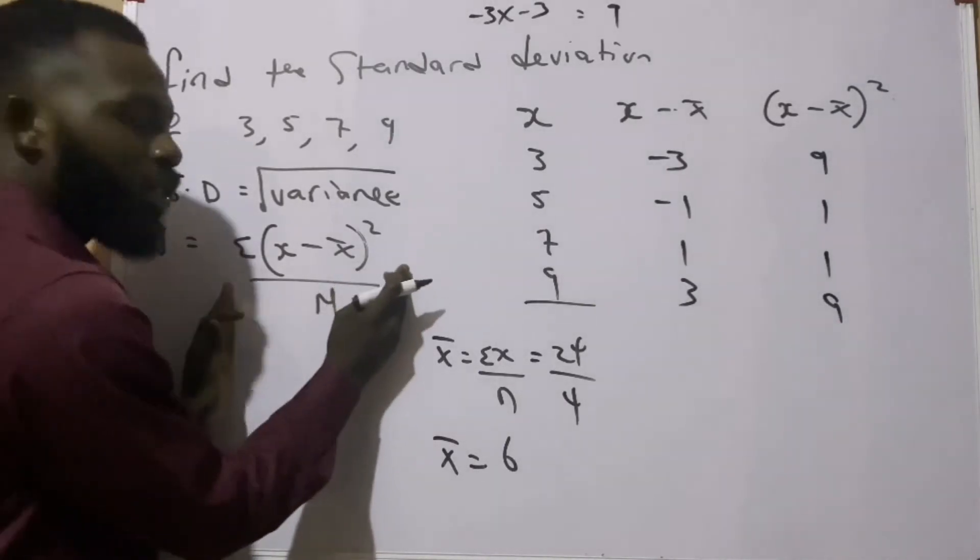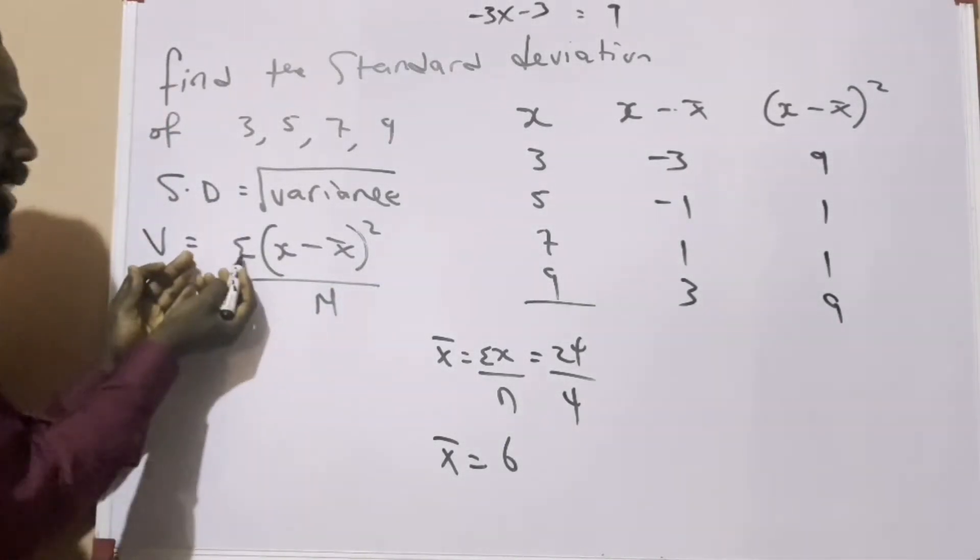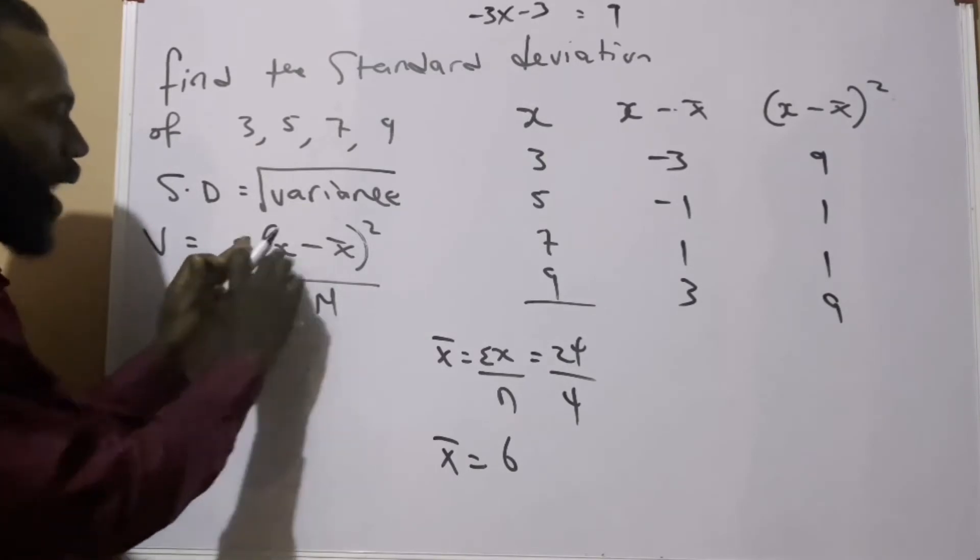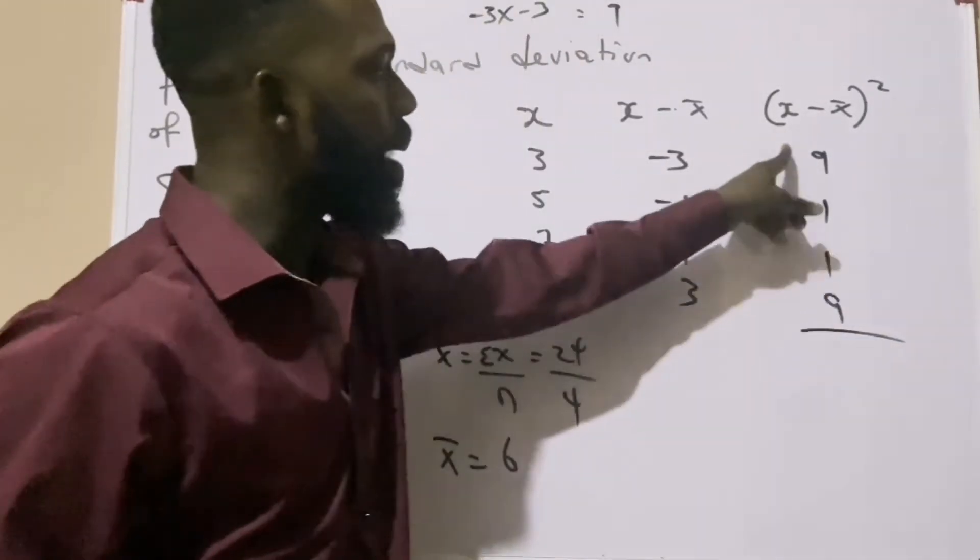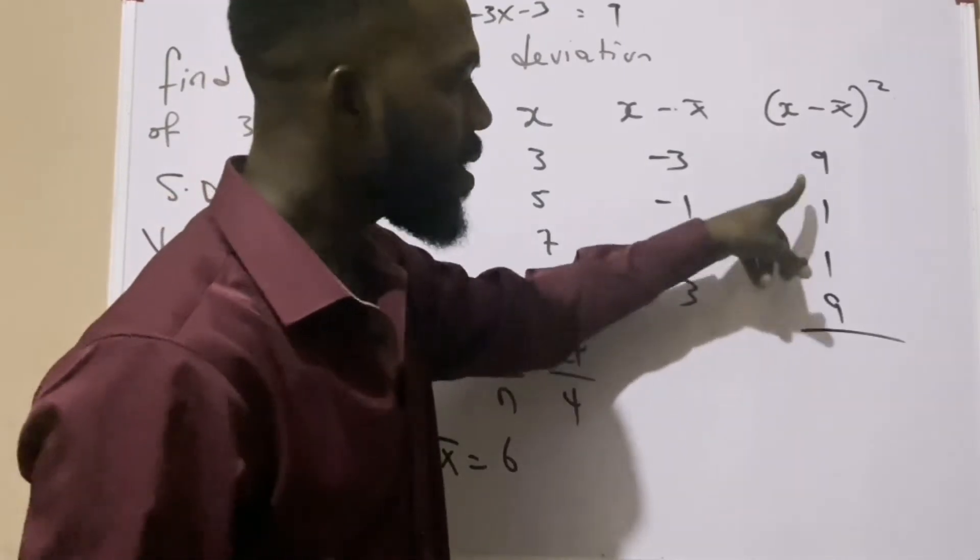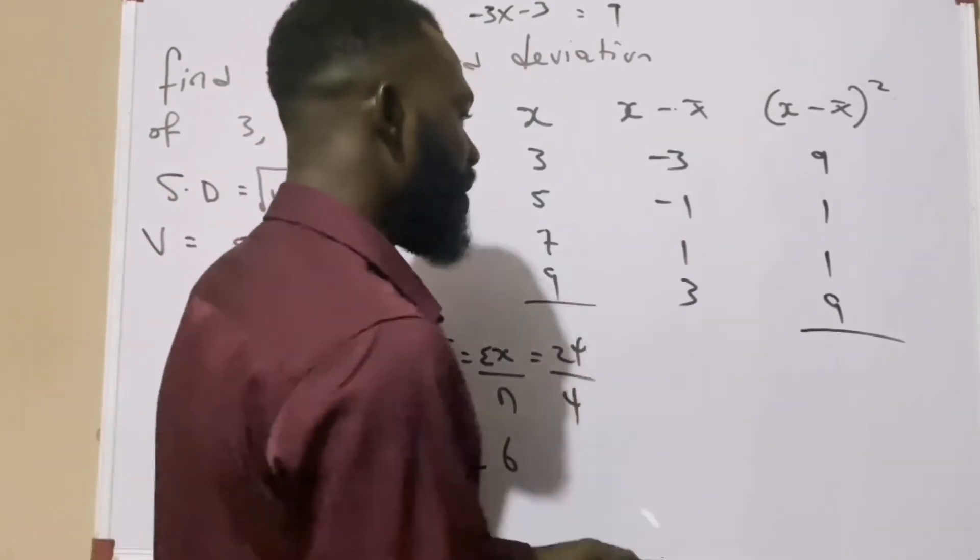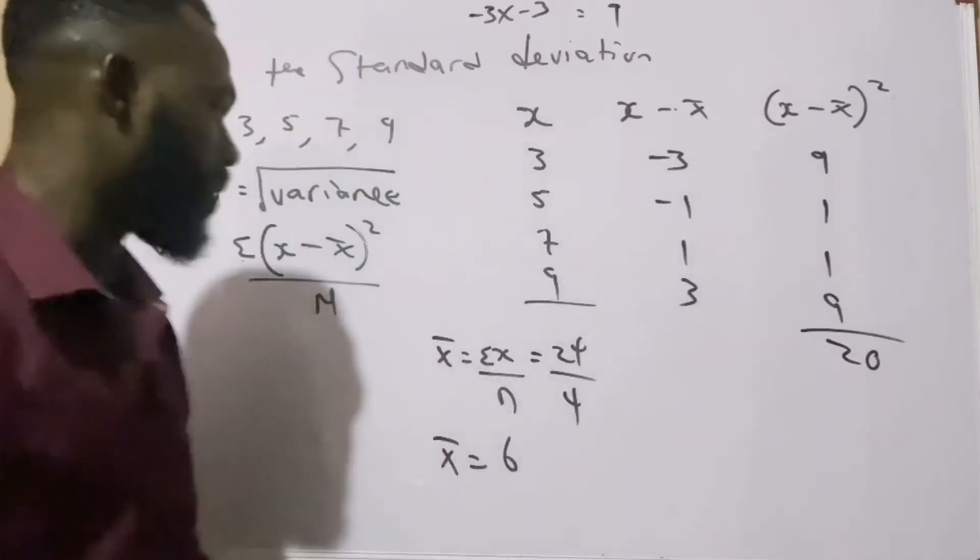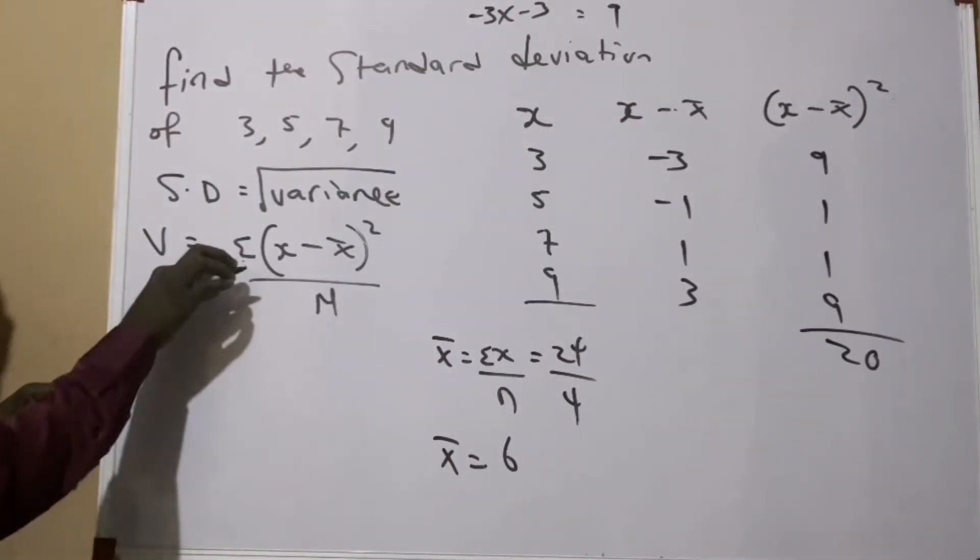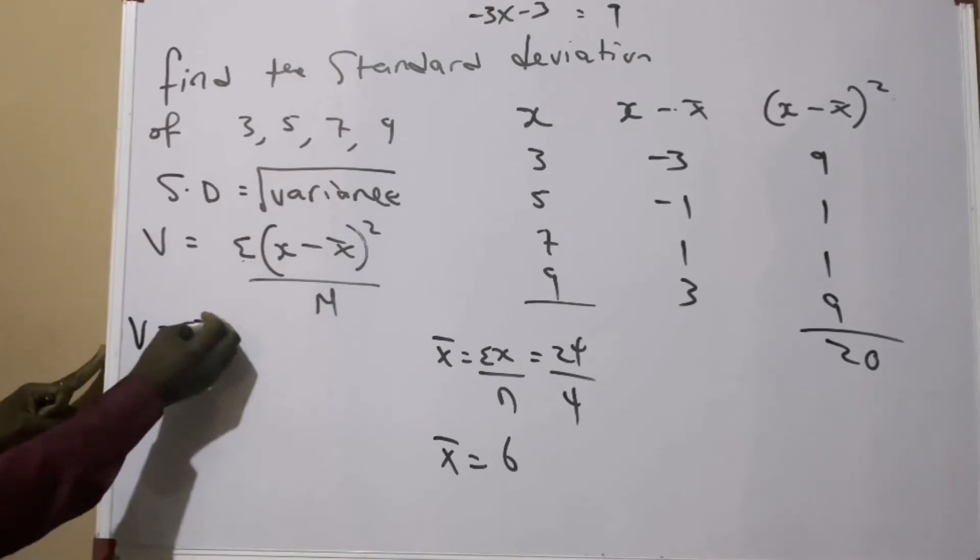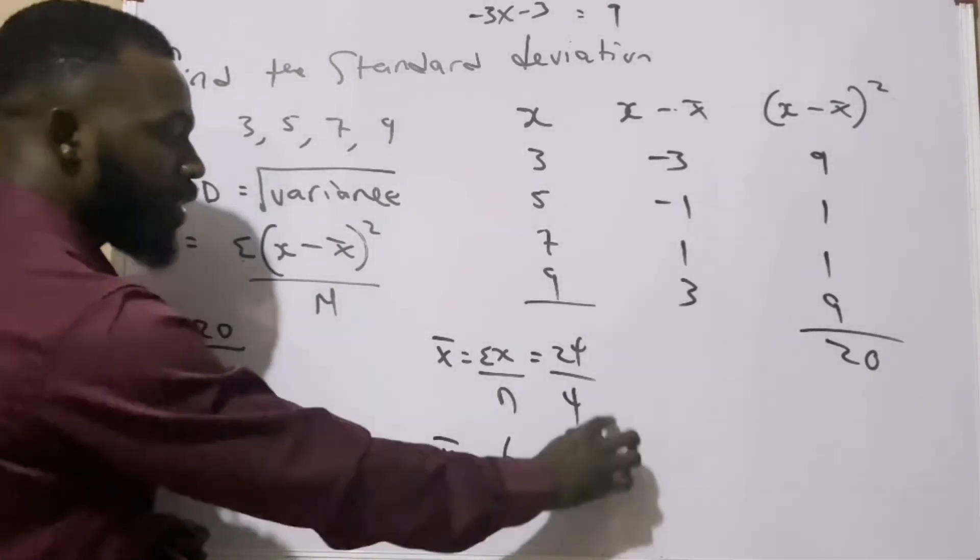Now when we come back to this formula, according to the formula it says add - sigma means add. So it means that we add all that I've got in our last column. So if I should do this: 9 plus 1 gives us 10, 10 plus 1 gives us 11, and 11 plus 9 gives us 20. So automatically in this question, our variance becomes 20 over n, and n is 4.